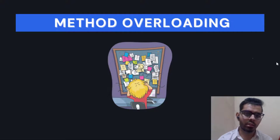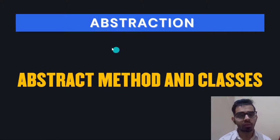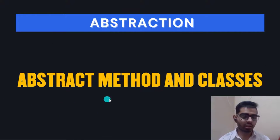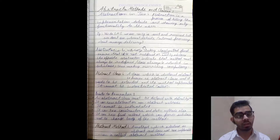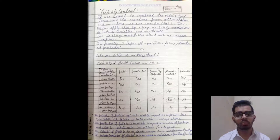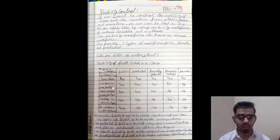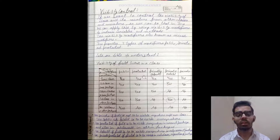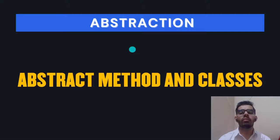One important concept to learn in Java is abstraction — what are abstract methods and abstract classes. I've provided notes for that with proper explanation and programs. Then there is visibility control — what are public, private, and protected classes and their access modifiers.